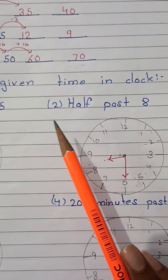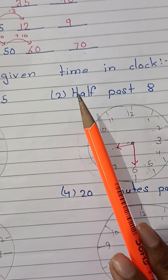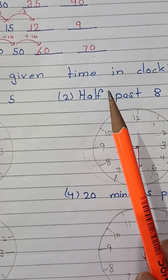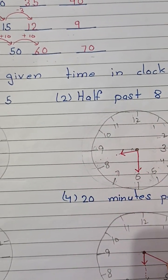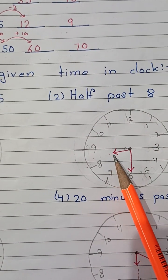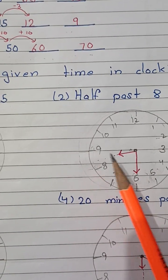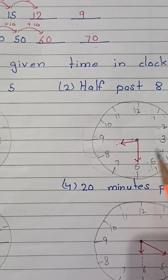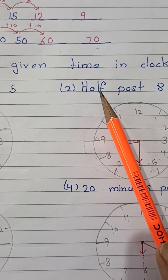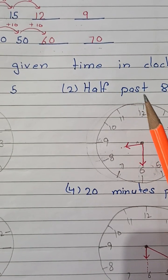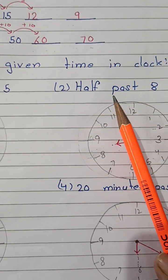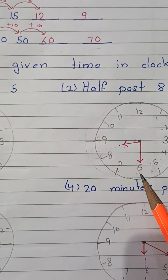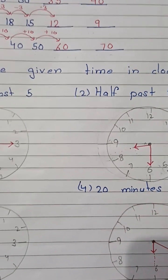Second question: half past 8. Half past means that half of the time has passed, meaning 30 minutes has passed 8. So the hour hand will be between 8 and 9, and the minute hand will be on 6. You have to remember that half past always means the minute hand will be on 6.